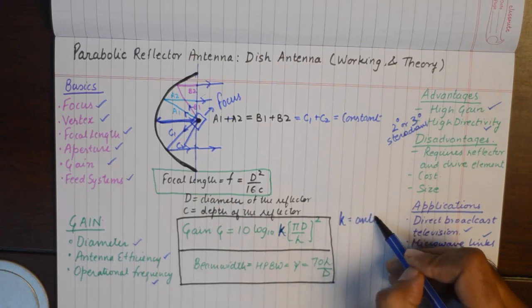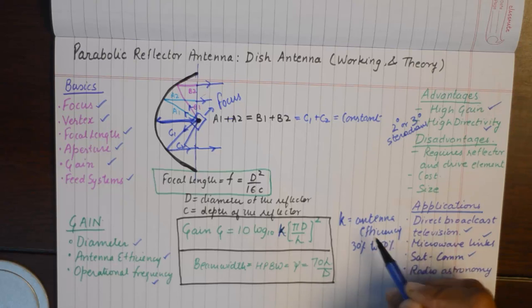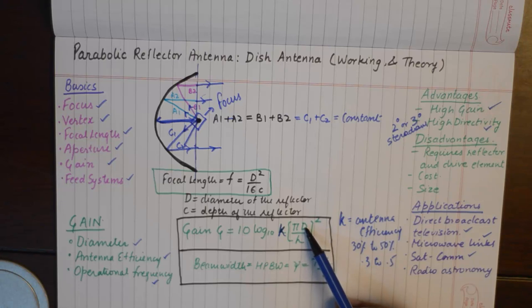Typical values are 30% to 50%, so you will find a value of 0.3 to 0.5 in numericals. D is the diameter of the parabolic reflector antenna and lambda is the operational wavelength.